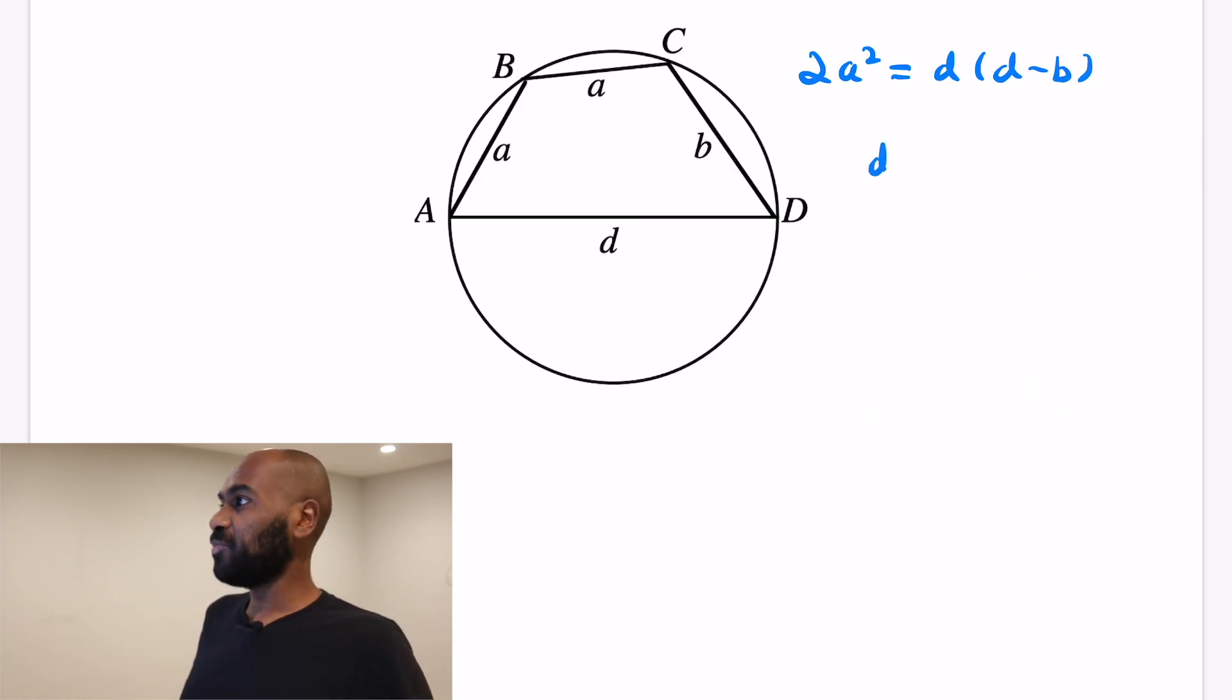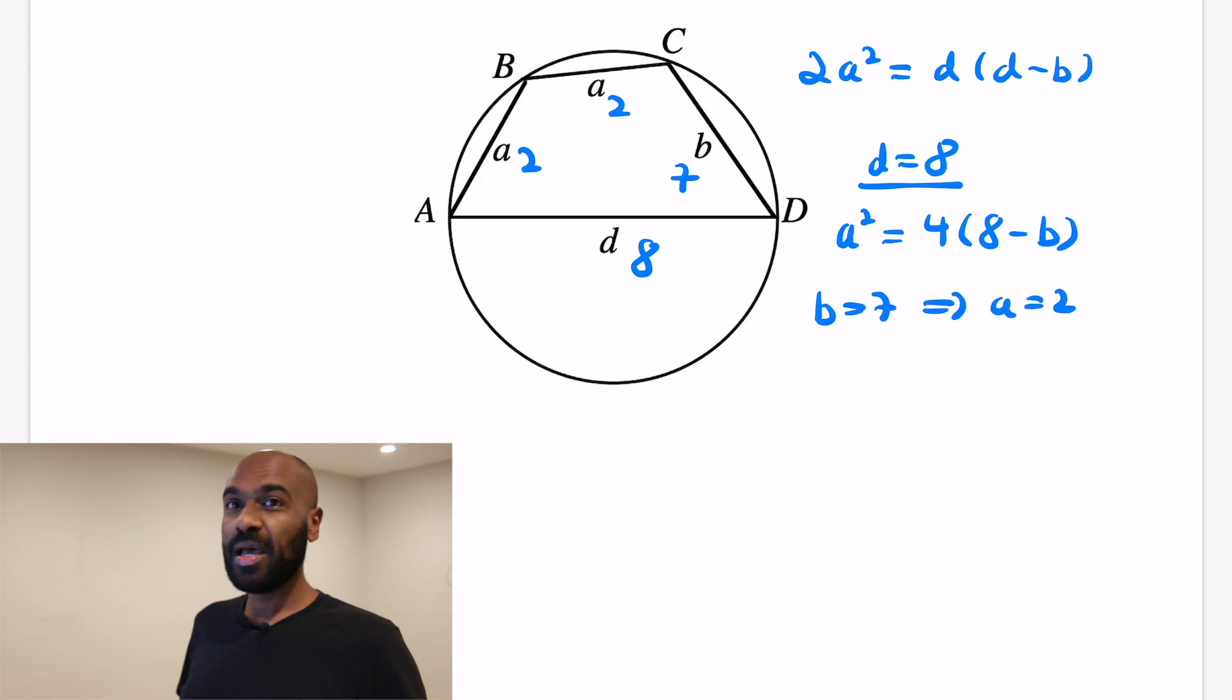This seems dreary, but let's move on to d equals 8 and hope for the best. So in the case that d is 8, we get a squared is 4 times the quantity 8 minus b, and lucky for us, if we make b 7, then the right-hand side is 4, which makes a 2, and so d being 8, and a being 2, and b being 7 actually works. So looking at the information that we got from the geometry of the situation, we're able to get a relationship between a, d, and b that finally through a number-theoretic approach got us that the minimum possible value of d is 8.